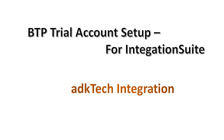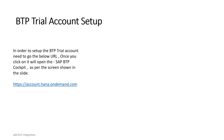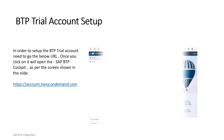In this journey of setting up the account, first of all, what we need to do is go to this link. Just open your browser and type this link: account.hana.ondemand.com. Once you click on it, you will have the SAP BTP cockpit on your screen, which will look like this.